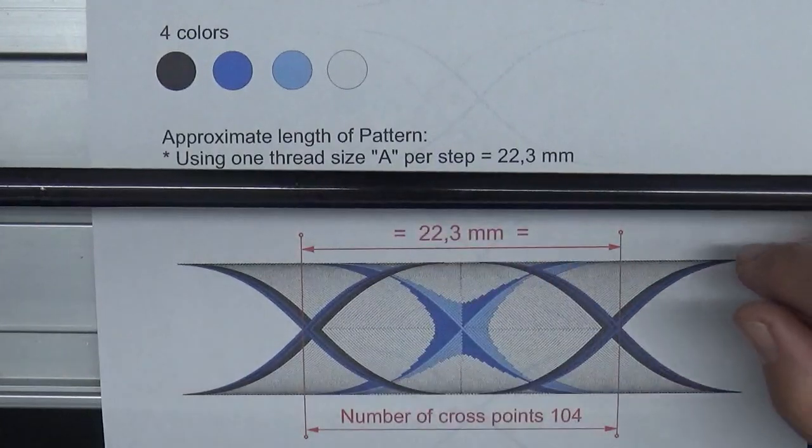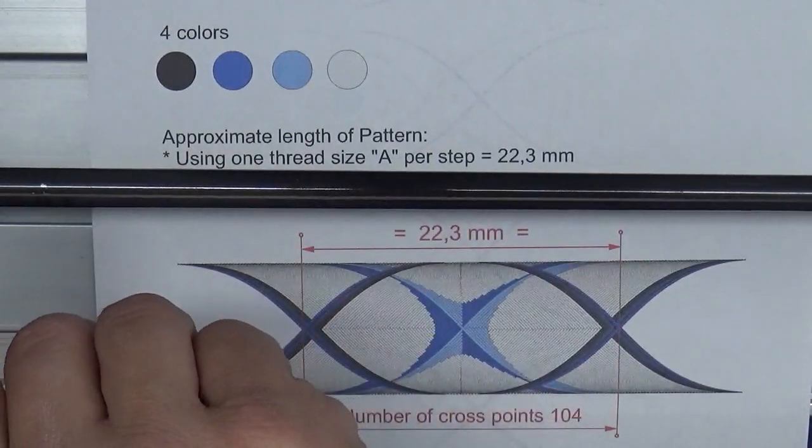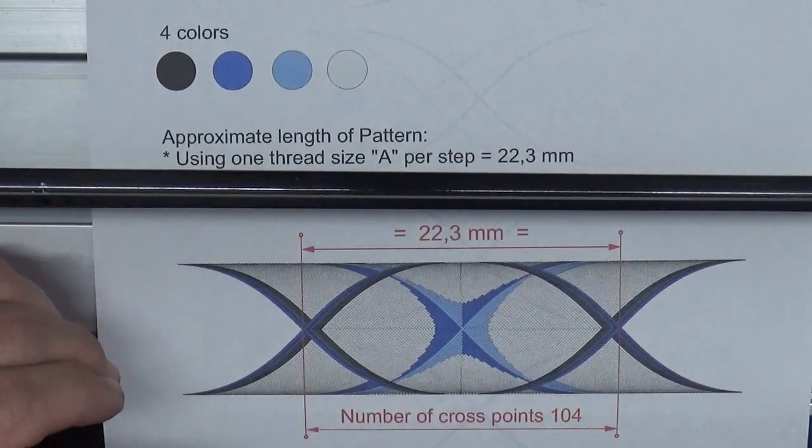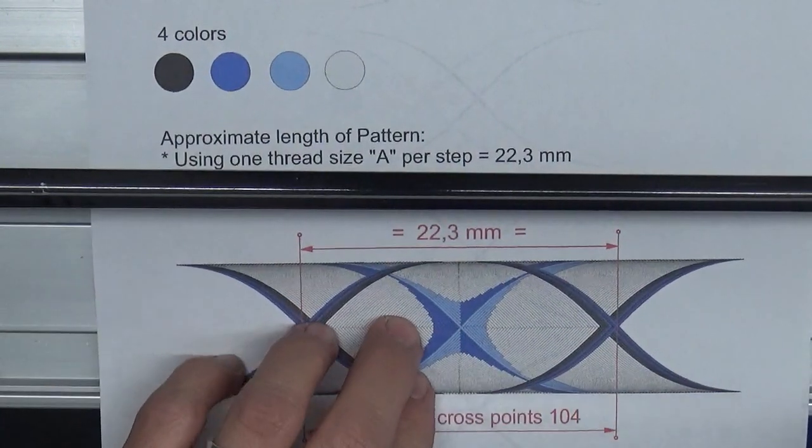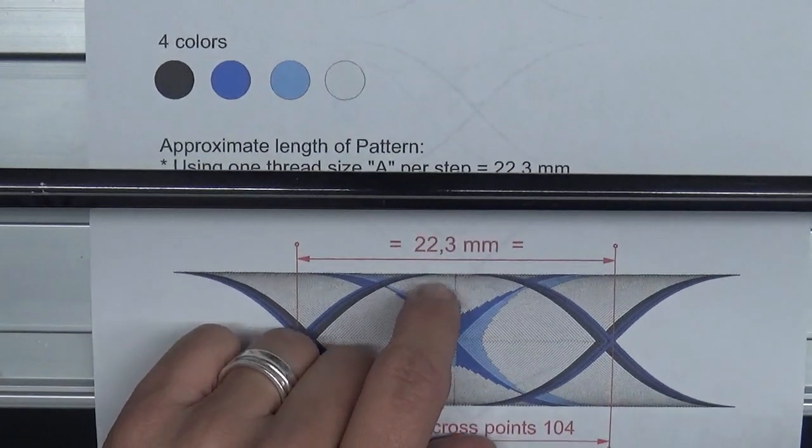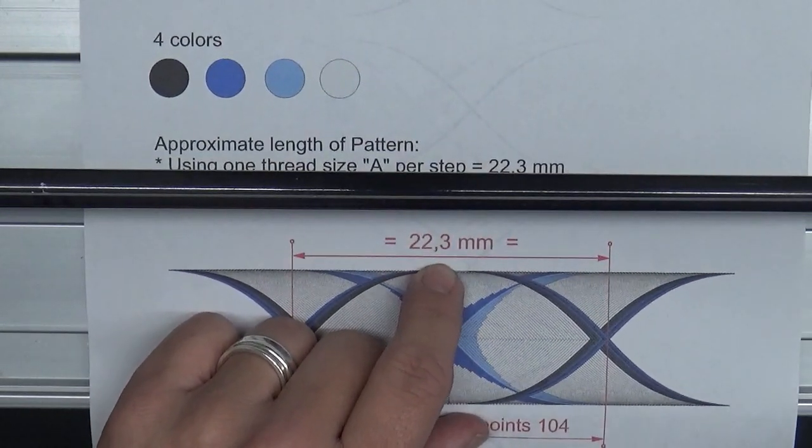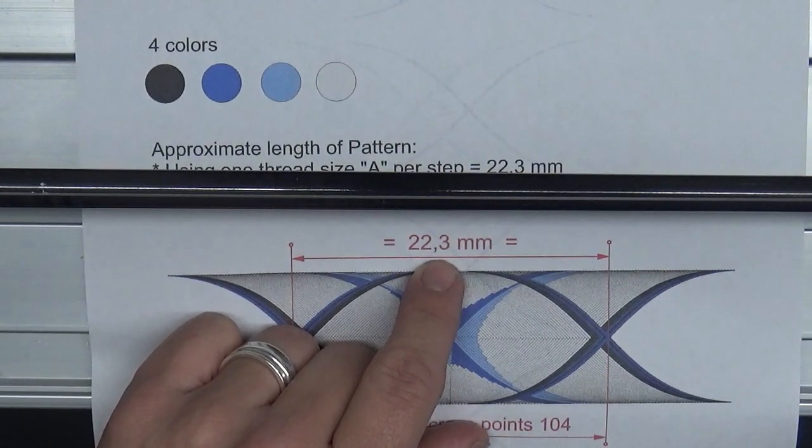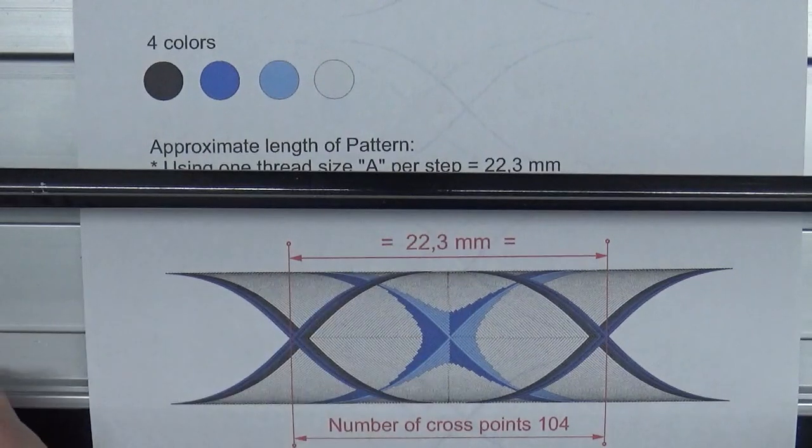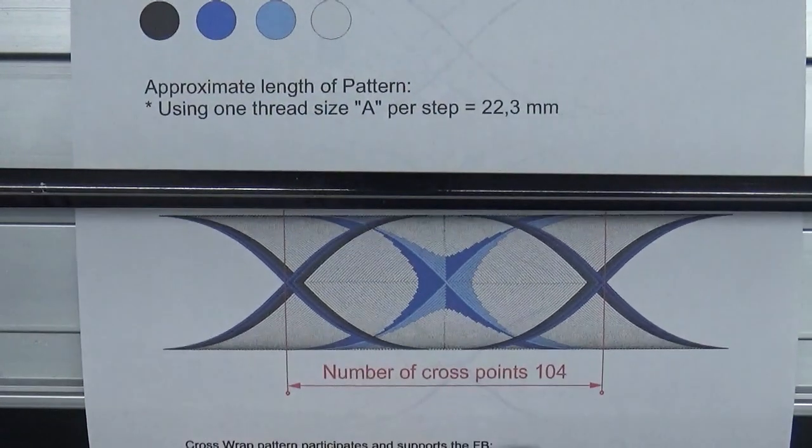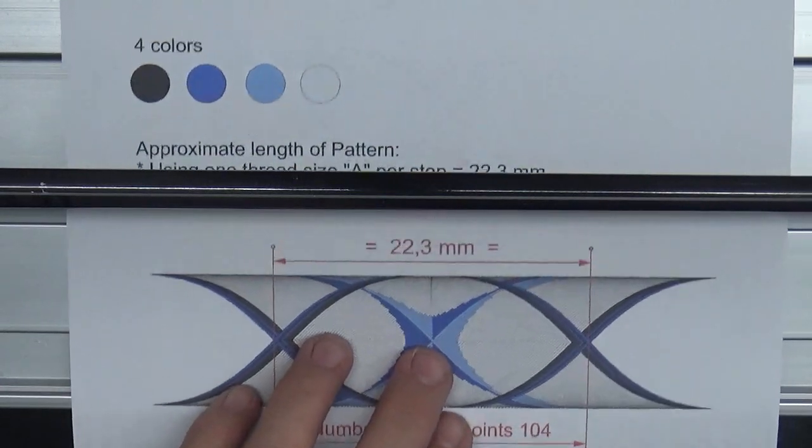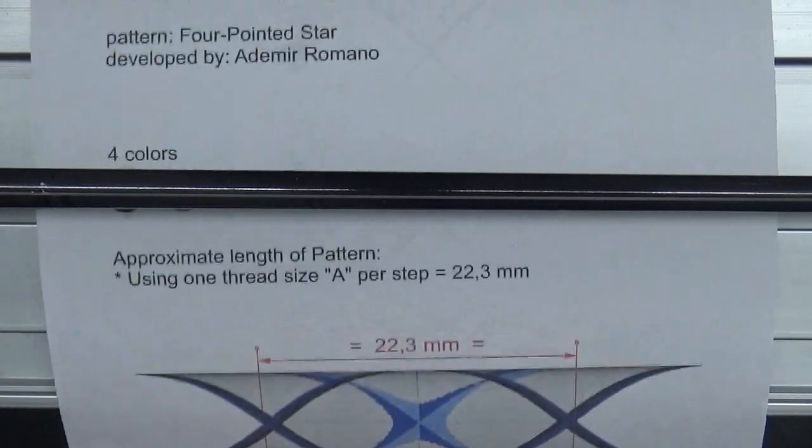So this one here calls for, it's going to be 22.3 millimeters. Of course, when Adam here designed this, he was using, or rather in Brazil they use the commas as periods, so it's 22.3 millimeters. And you have a number of 104 cross points, and the only thing that's really particular is this measurement here.